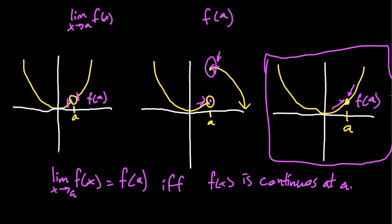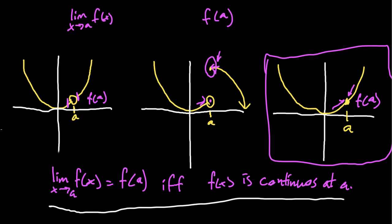I want to accentuate this one more time: this only holds when our function is continuous at that point a. This is something you should memorize for your calculus courses — the limit as x approaches a of f(x) equals f(a) if and only if f(x) is continuous at a.